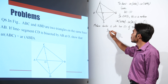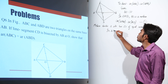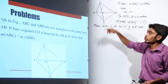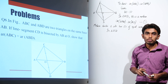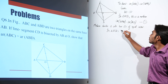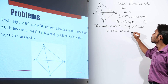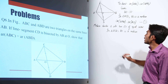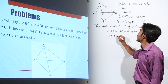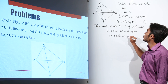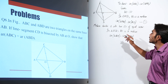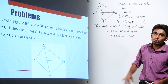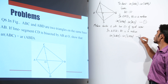Similarly, in triangle BCD, since CO is equal to DO, BO is acting as a median as well. Using the same property, area of triangle BCO is equal to area of triangle BDO — the median divides triangle BCD into two triangles of equal areas. Let this be equation number 2.